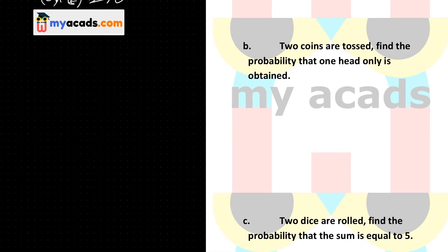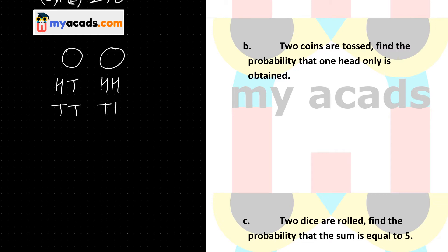Now question 10 part B: two coins are tossed. Find the probability that only one head is obtained. When two coins are tossed, the sample space is {HH, HT, TH, TT}, so NS is 4.